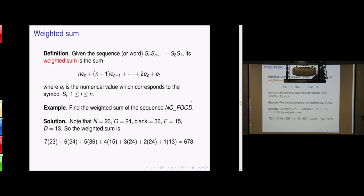The coding will be done using a weighted sum. Given a sequence of n symbols SN, SN minus 1, ..., S1, the weighted sum is N times E_N plus (N minus 1) times E_{N-1} plus ... plus 1 times E_1, where E_i is the numerical value of symbol S_i. For example, find the weighted sum of 'NO PUT': this is a sequence of length 7. N is 23, O is 24, blank is 36, and so on. You compute 7 times 23 plus 6 times 24 plus 5 times 36, and so forth, getting 678.